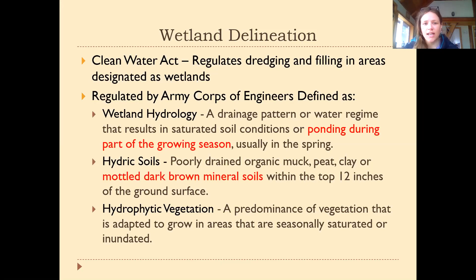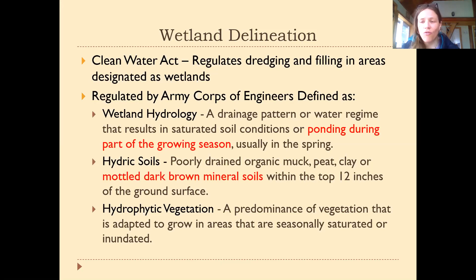The third characteristic we're looking for is specific vegetation — a predominance of vegetation adapted to grow in areas that are seasonally saturated or inundated. We've already used the example of rice, which grows in many previously wetland areas in the Central Valley, where water that once provided seasonal flooding is now channelized to flood specific rice fields. Of course if you've been to other marsh environments, you can imagine other wetland plants — cattails, reeds — adapted to grow in soil without the same oxygen that most other plants depend on.